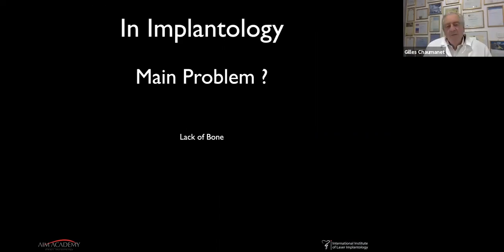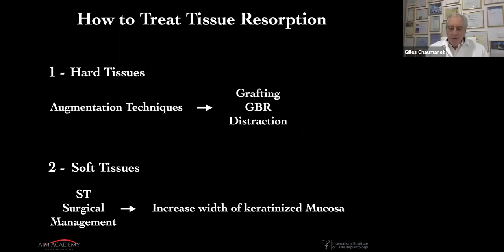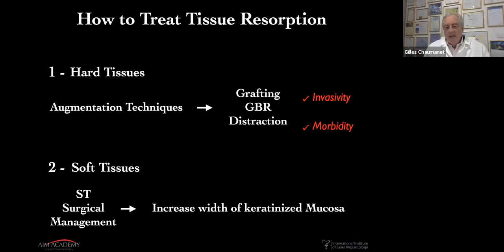In implantology, the main problem is represented by the lack of bone. If we want to treat this resorption on hard tissue, we have augmentation techniques such as grafting and guided bone regeneration. On the soft tissue side, it's represented by management of soft tissues or augmentation techniques, mainly by increasing the width of keratinized mucosa. But all these techniques are invasive, lead to morbidity, are time-consuming, and none are fully predictable.